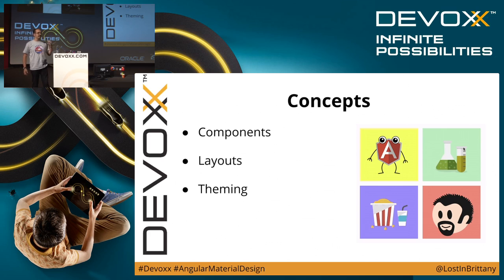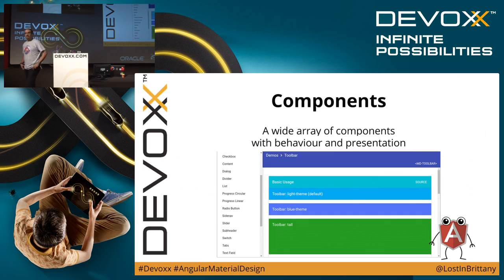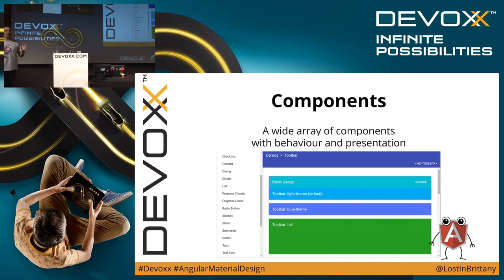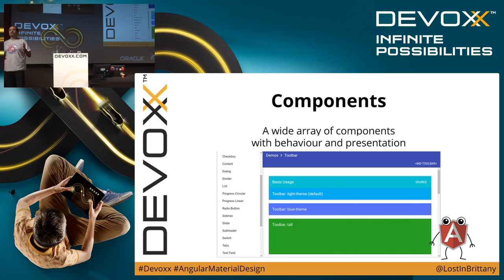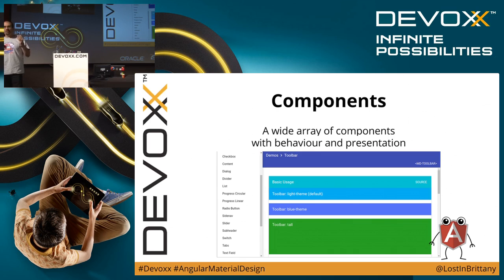There are some key concepts in Angular Material Design. The first one is components. When the project began it was a small project, but right now you can find inside it all the standard components from Material Design: the cards, the toolbars, the sidebars, and all those components. As the Material Design guidelines ask for, they are fully responsive. So if you want to adapt your application from the small screen of a smartphone to the big screen of a cinema display, you have many breakpoints already built in and your application is going to look its best at each screen size.